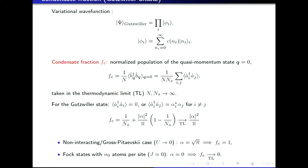One can show that the condensed fraction — the number of particles in the quasi-momentum state q equal to zero — within this Gutzwiller ansatz, in the limit of large N and large number of sites, is proportional to the modulus squared of alpha. In the non-interacting limit, alpha is equal to the square root of the mean filling, so the condensed fraction is one, as expected for an ideal gas at T equals zero. For Fock states, alpha is zero and the condensed fraction also tends to zero. The question is what happens in between.